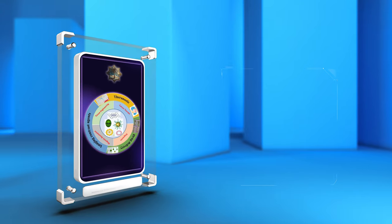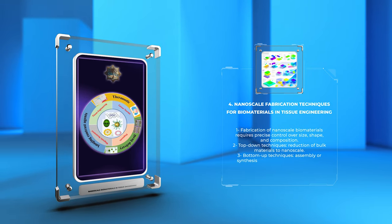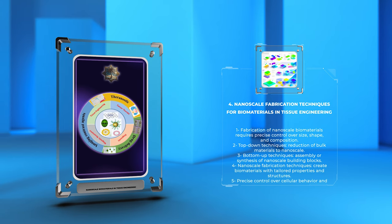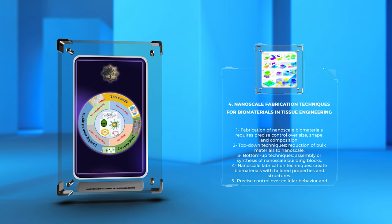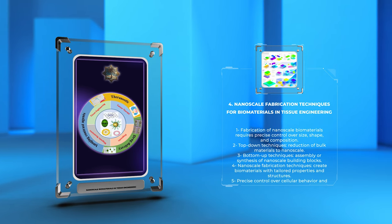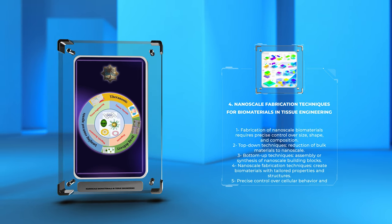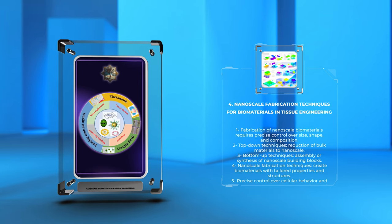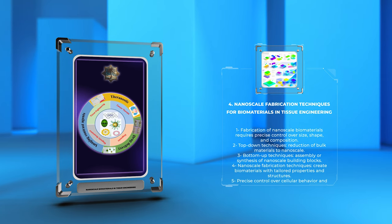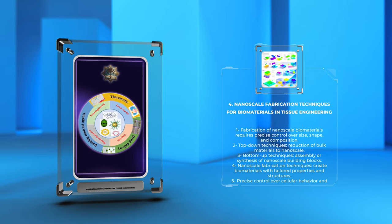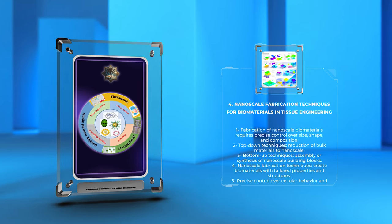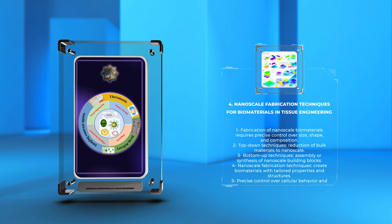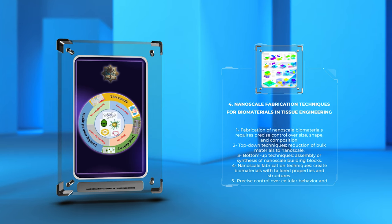The fabrication of nanoscale biomaterials requires precise control over their size, shape, and composition. Several nanoscale fabrication techniques have been developed, including top-down and bottom-up approaches. Top-down techniques involve the reduction of bulk materials to nanoscale using various methods such as milling, lithography, and etching. On the other hand, bottom-up techniques involve the assembly or synthesis of nanoscale building blocks to form the desired structure. These techniques include electrospinning, self-assembly, biomineralization, and molecular self-assembly. Thanks to these nanoscale fabrication techniques, we can create biomaterials with tailored properties and structures, allowing for precise control over cellular behavior and tissue regeneration.